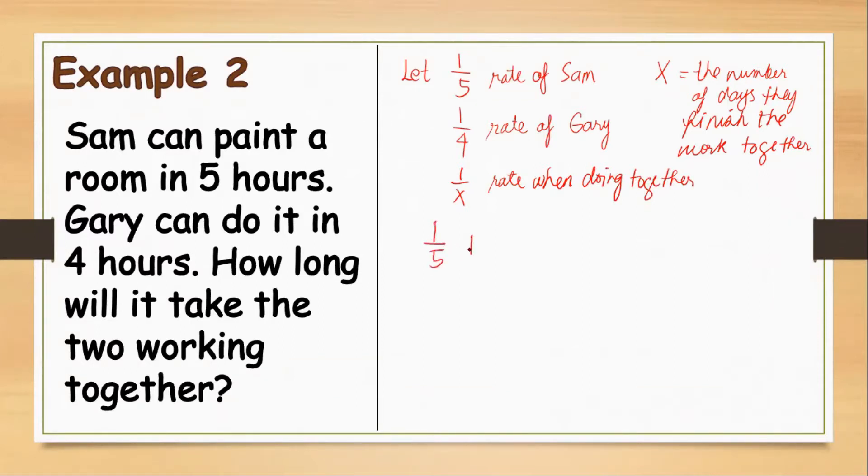So let's try to solve this. That's 1/5, the rate of Sam, added by the rate of Gary. That will be equal to 1 over X, or that is their rate when they do the painting together. Now, first step is we should find the LCD. Take note that our denominators are 5, 4, and X. The least common denominator for 5 and 4 is 20, and X is our variable here. So let's have our LCD as 20X. Our next step is to multiply both sides of the equation with our LCD.